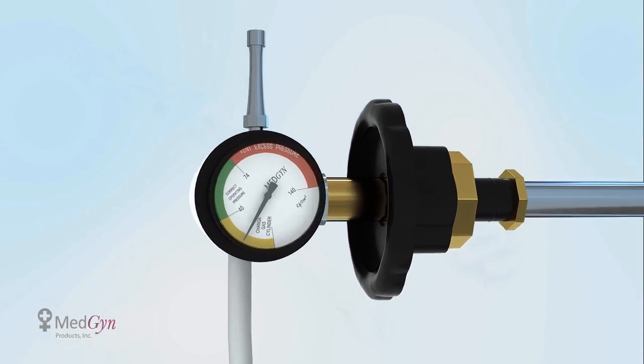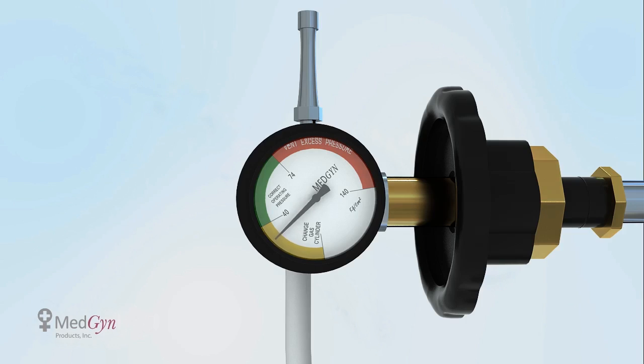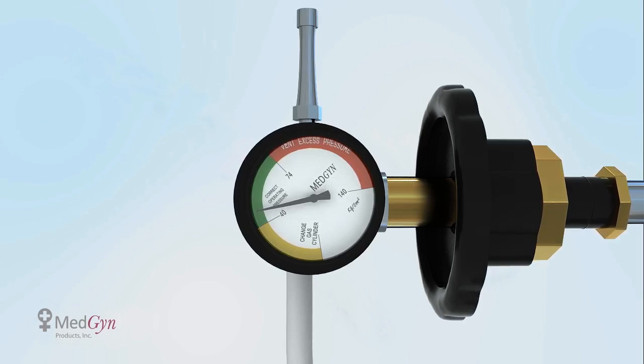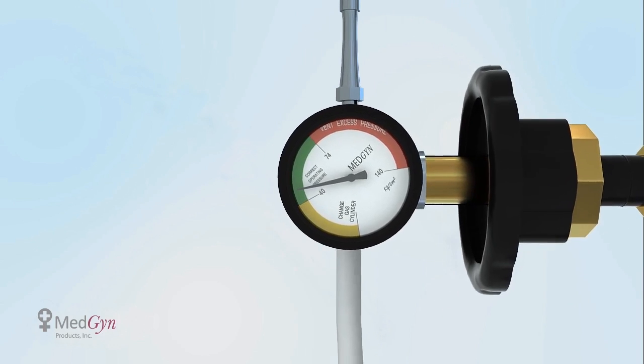The needle on the gauge needs to be in the green area. If red, the pressure is too high to perform the procedure. If yellow, the pressure is too low to perform the procedure.